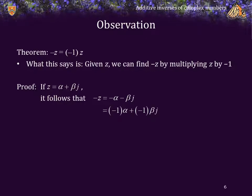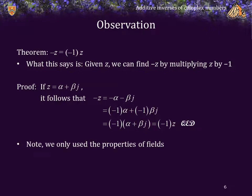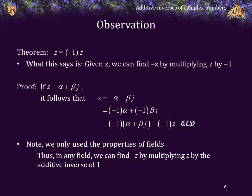But wait — alpha is real, so negative alpha is just negative 1 times alpha. Negative beta is just negative 1 times beta. And now we can factor out a common factor of negative 1. Therefore we have negative 1 times alpha plus beta j is equal to negative 1 times z. Note that we only use the properties of the fields in this proof. Consequently, in any field we can always find the additive inverse of z by multiplying z by the additive inverse of the multiplicative identity 1.